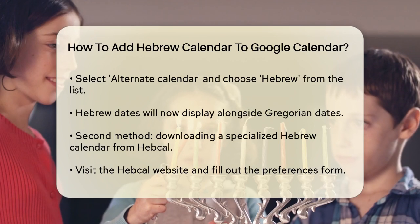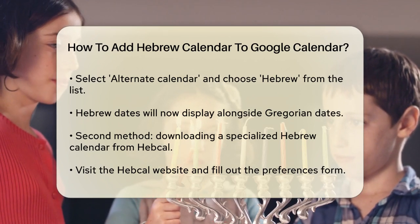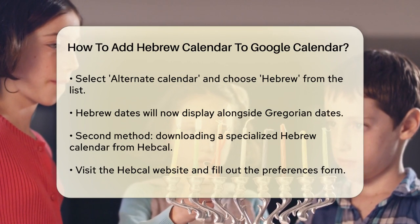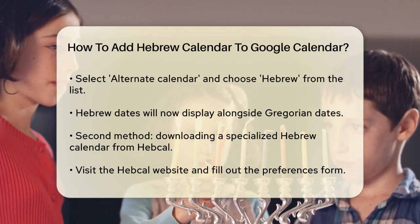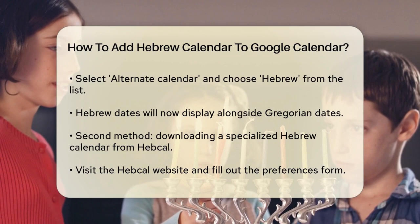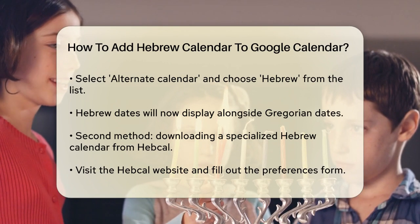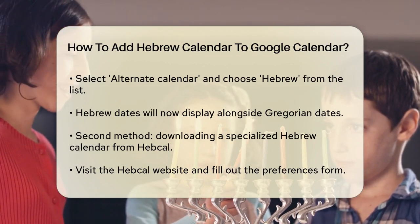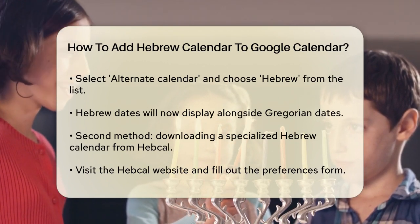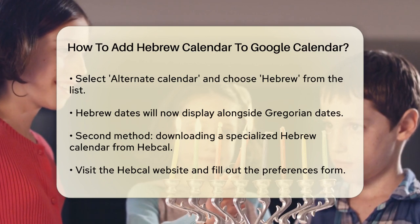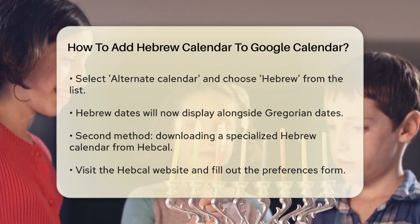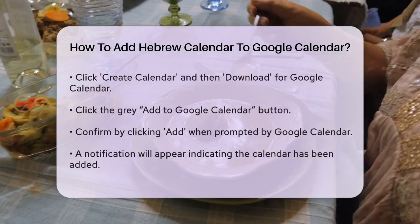This will display Hebrew dates alongside the Gregorian dates on your calendar. Another way to add Hebrew calendar dates is by downloading a specialized calendar from a website like HebCal. To do this, go to the HebCal website and fill out the form with your preferences. Click the Create Calendar button, then click the Download button. Select the Google Calendar option from the Download dialog box.